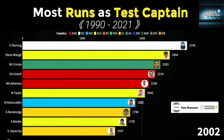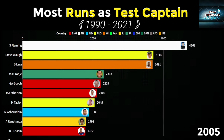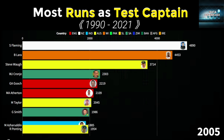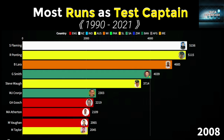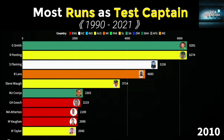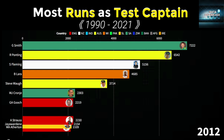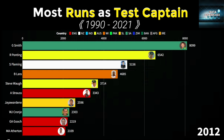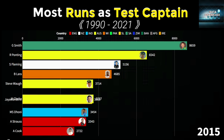Graham Smith scored the most hundreds as a test captain, i.e. 25 hundreds. The most win percentage as captain is by Steve Waugh, that is 71.93% in 30-plus matches.